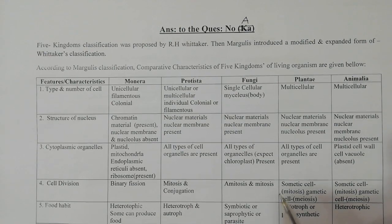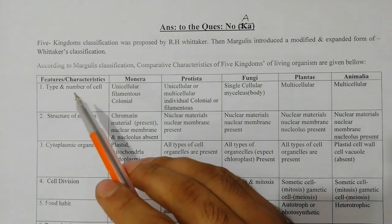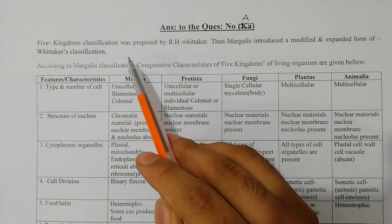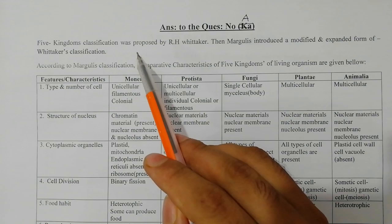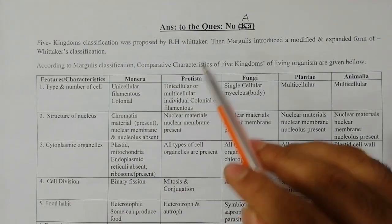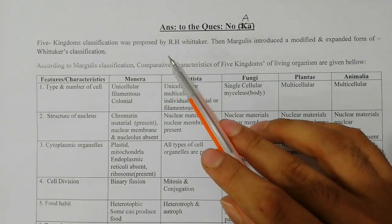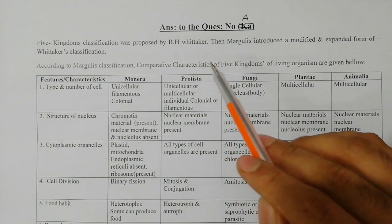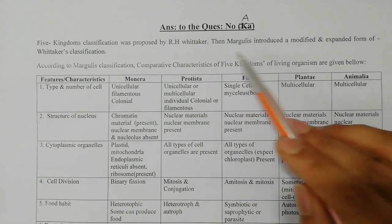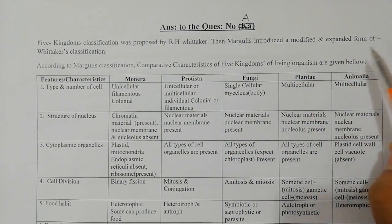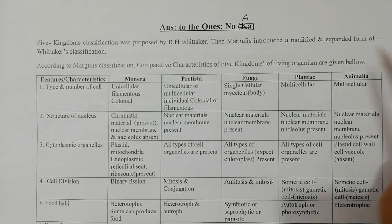The first five kingdoms classification was proposed by R.S. Whittaker. Then, Margulis introduced a modified and expanded form of Whittaker's classification.